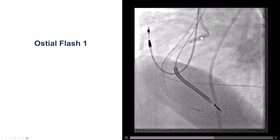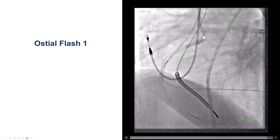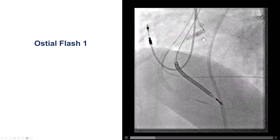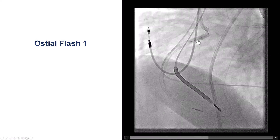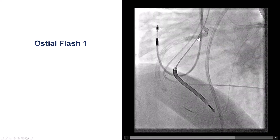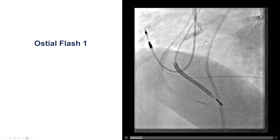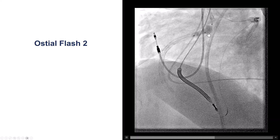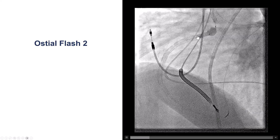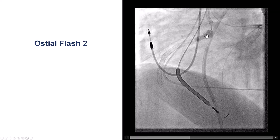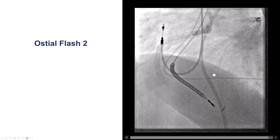We then wanted to flare the ostium because it was quite challenging to engage the RCA. As we remember from the CT, it was an anterior take-off. This was the ostial flush balloon. The ostial flush was too deep here, so we pulled it back a little bit and now we have nice flaring of the ostium. We have the anchoring balloon in the right position, and the larger balloon is essentially pushing the stent struts against the wall of the aorta.